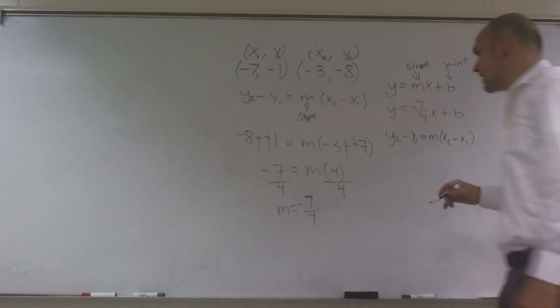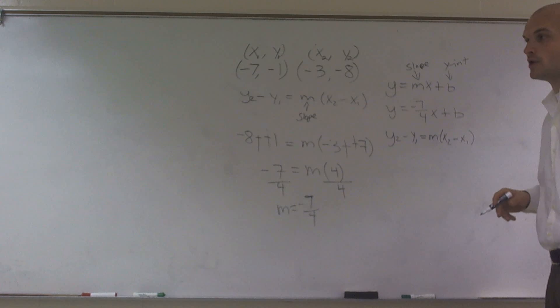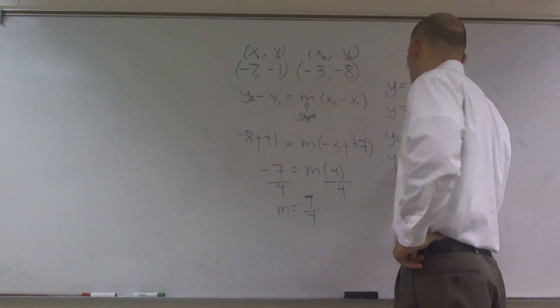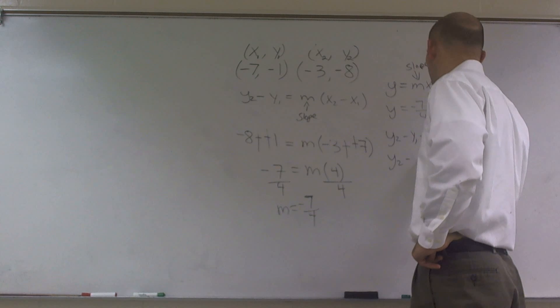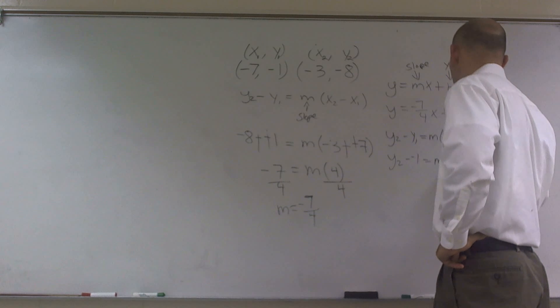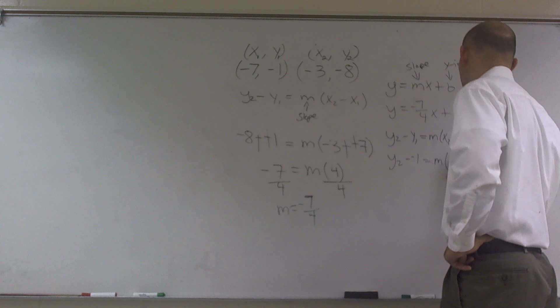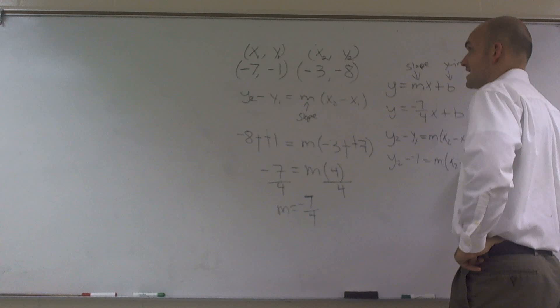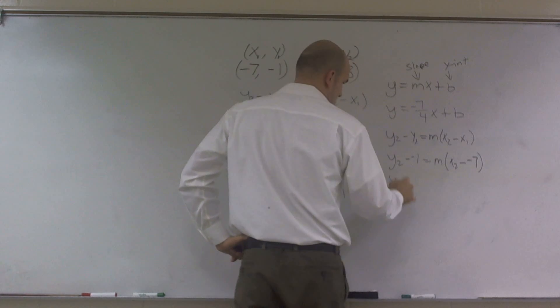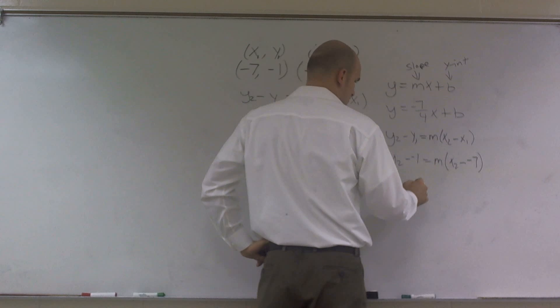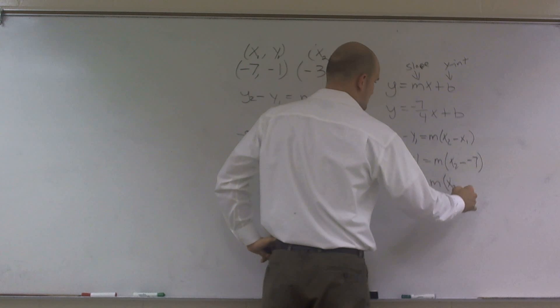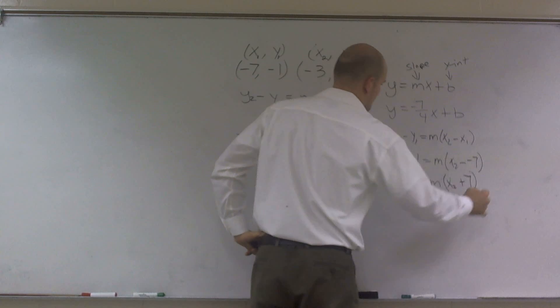And it's usually helpful, just trust me on this one, to pick y1. OK? Y1 and x1. Pick your first point. So y2 minus y1, which was a negative 1, equals m times x2, which is not x squared, minus x1, which was a negative 7. I can rewrite this as y2 plus 1 equals m times x2 plus 7. All right?